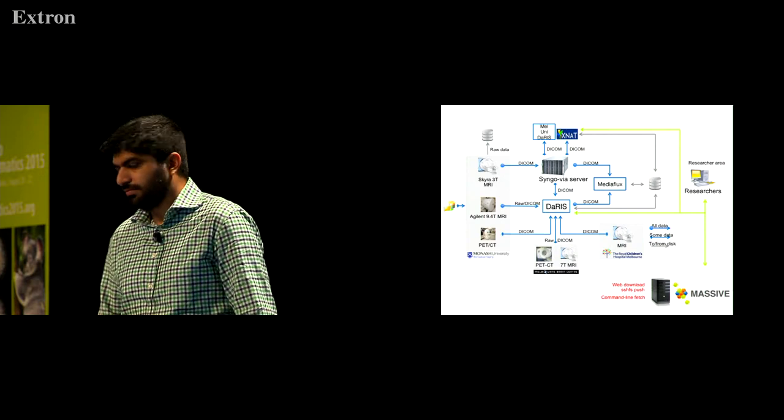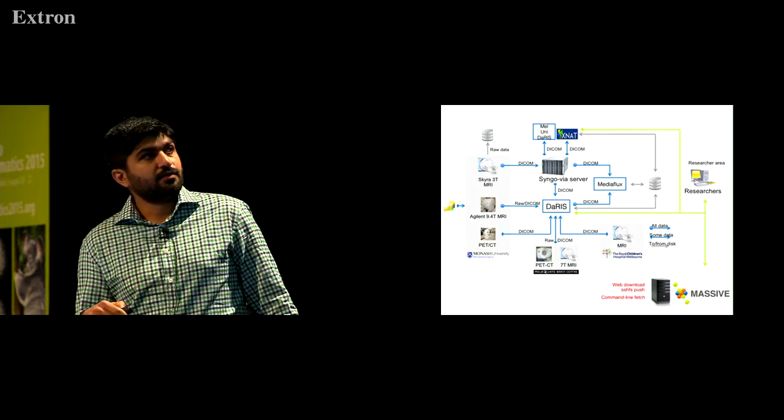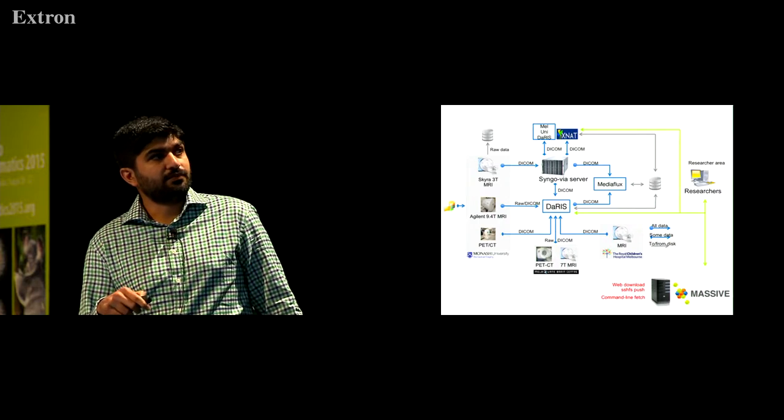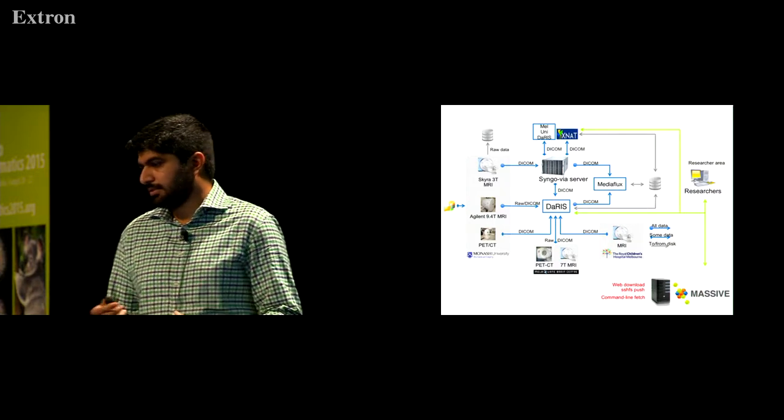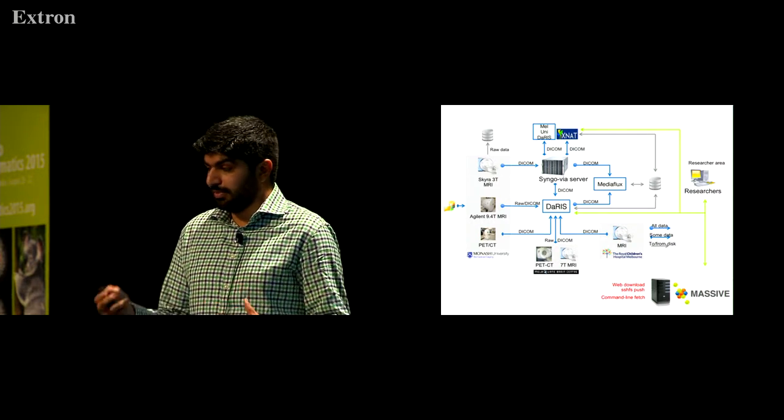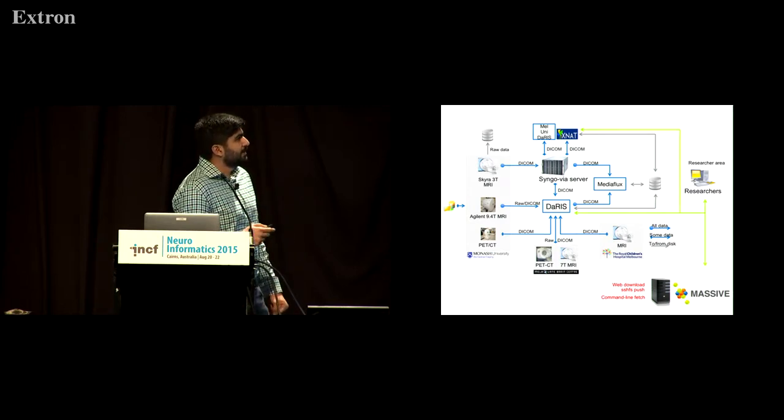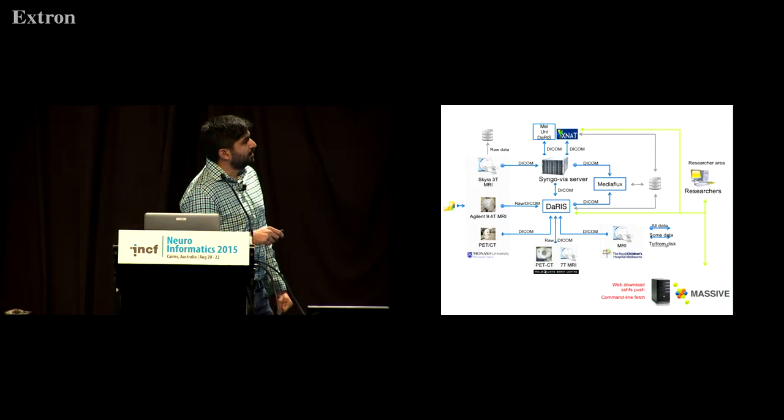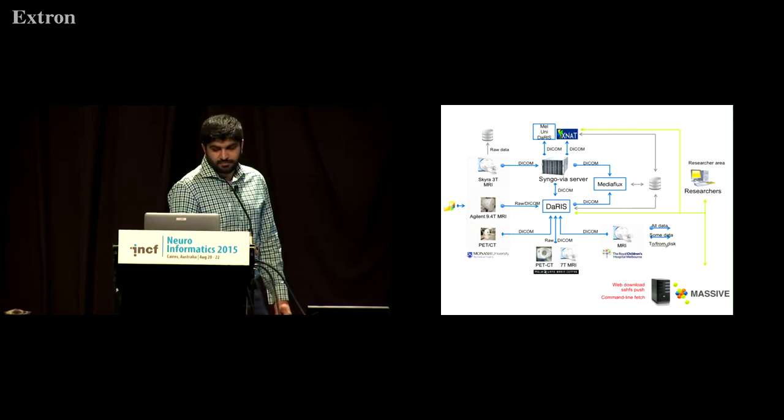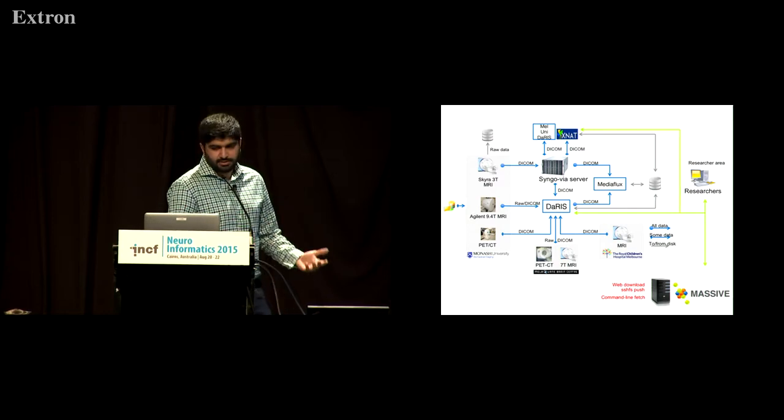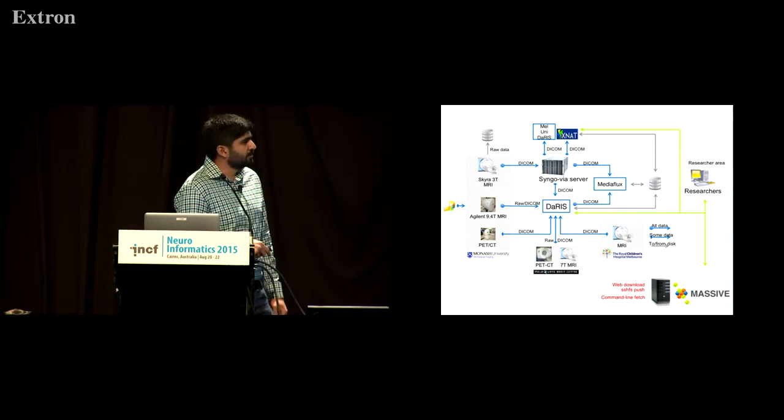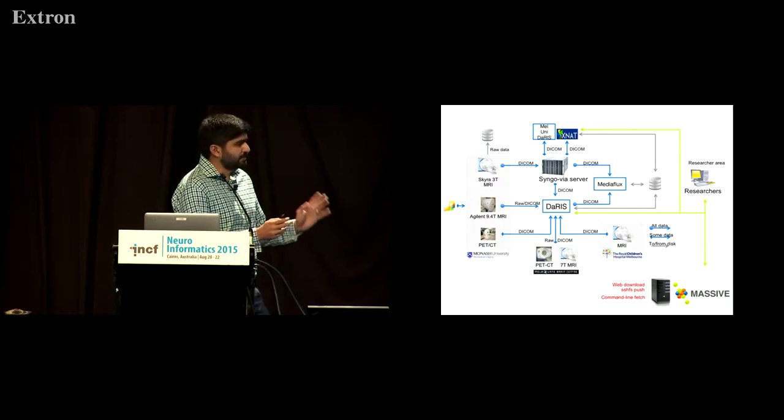And to give you an example of the sort of informatics type setup at MBI, we've got data coming in from three scanners, and there'll be a fourth one very soon, into our central data store, which is Daris. And Daris is like XNAT. It's a centralized medical imaging database that's built on top of MediaFlux, which is a media asset management system. And then it goes off onto some disks and gets stored there. And we also get data from off-site. So we've got some researchers in Monash or even other universities that are using facilities off-site and they want to store their data together with all the other studies that they're doing at Monash. And they can access their data via Daris using a web portal or onto the computational resources using web download, command line fetch. There's lots of ways of actually getting to your data.